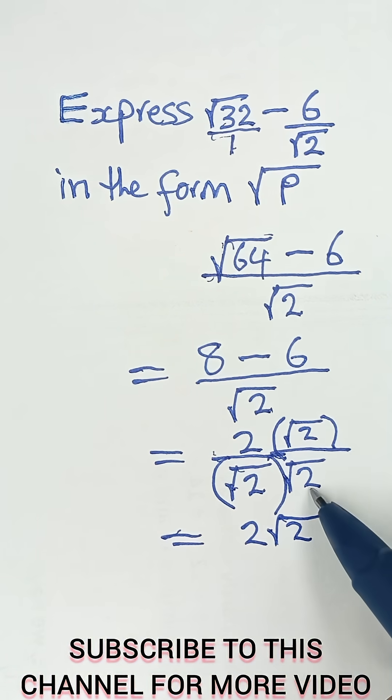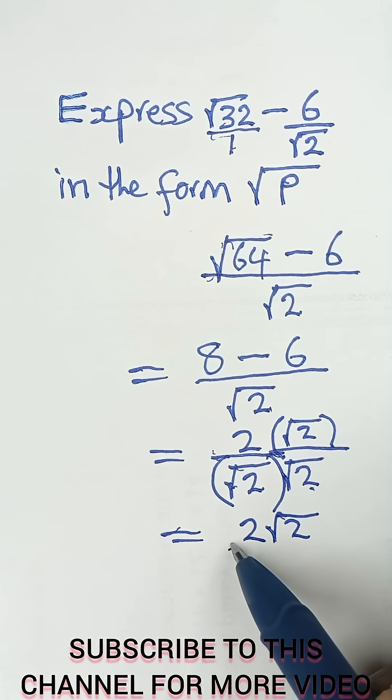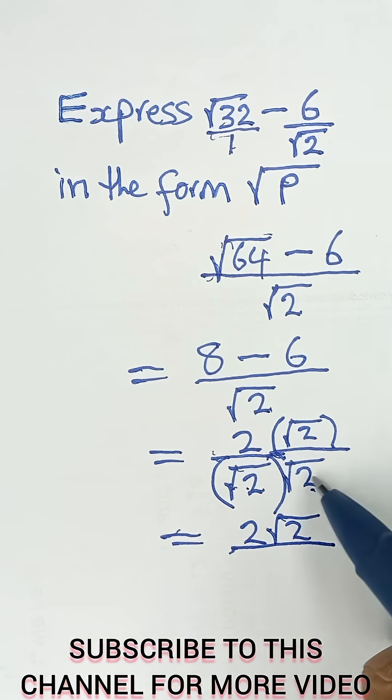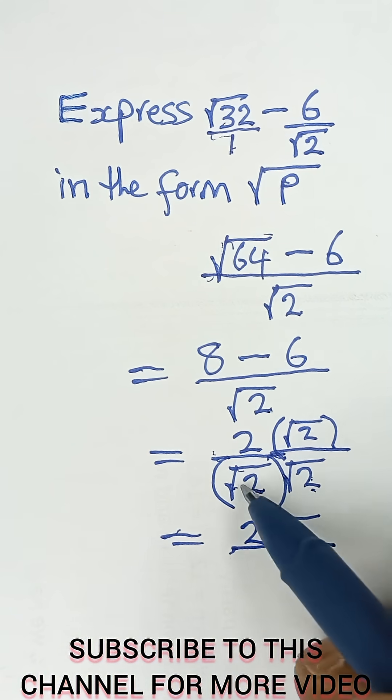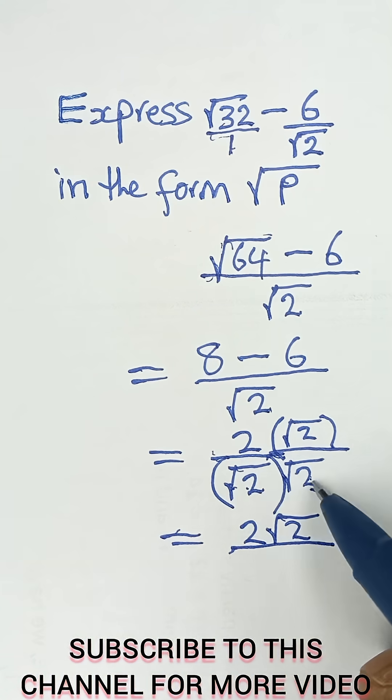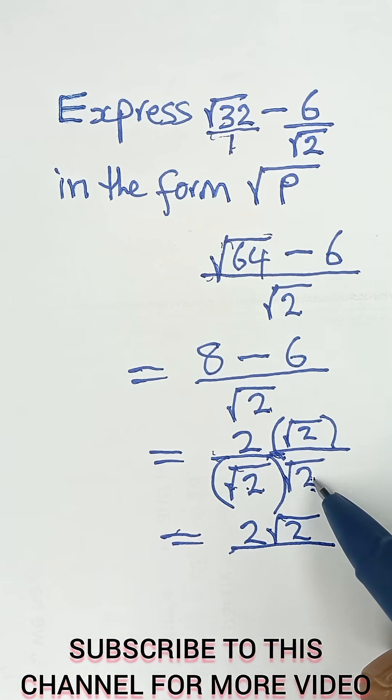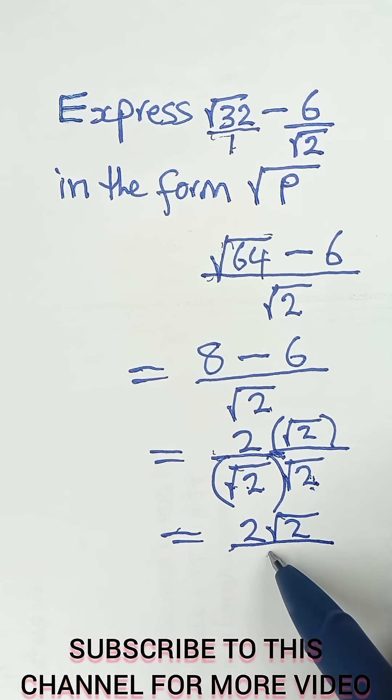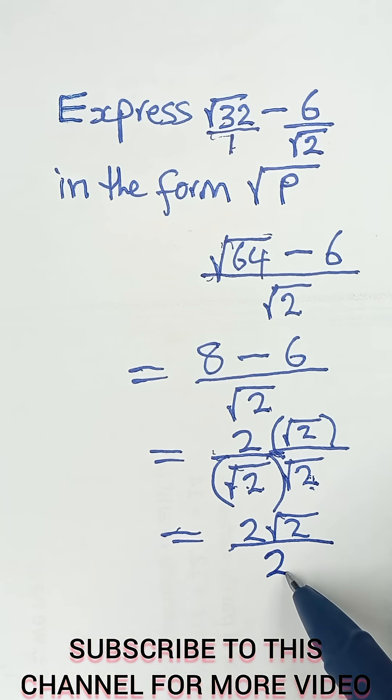Then √2 multiplied by itself is simply 2. So when you have the same value in the root sign multiplying themselves, it simply gives you what is inside the root sign, which is 2.